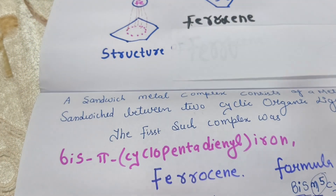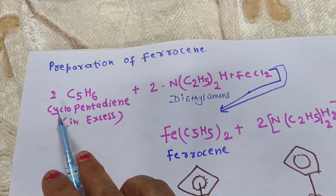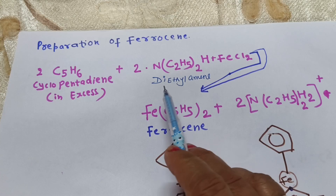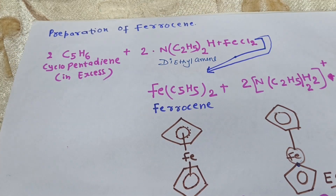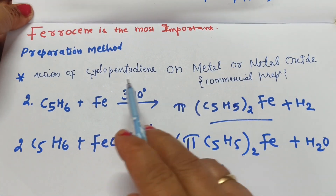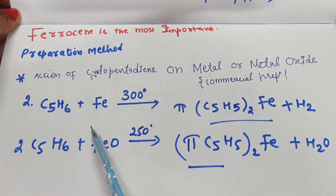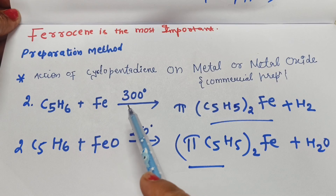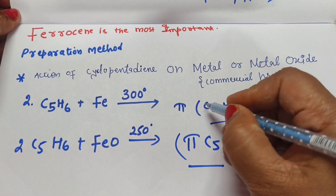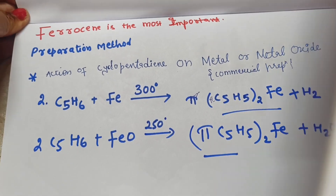The next important preparation method involves taking cyclopentadiene in excess with a strong base, diethylamine, to prepare ferrocene. A third preparation method involves the direct action of cyclopentadiene on the metal or metal oxides. For example, cyclopentadiene plus iron at high temperature forms ferrocene. Alternatively, metal oxides can be used. These are the main preparation methods of ferrocene.